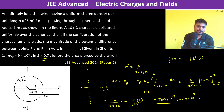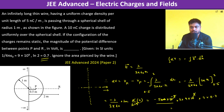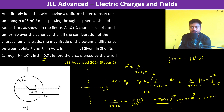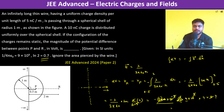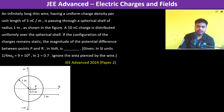Since ln 2 is given as 0.7, ln 4 = 2 × 0.7 = 1.4. The terms cancel appropriately: 5 × 2 = 10, 10 × 0.7 = 7, 7 × 2 = 14, and 14 × 9 = 126. So the potential difference due to the infinitely long wire is −126 volts.